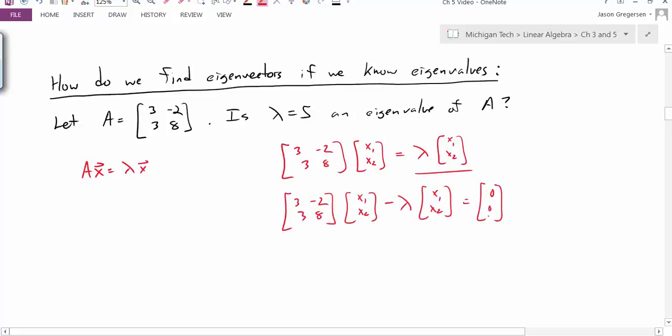So to do that I'm going to subtract this piece over to the left hand side. Notice the right hand side is the zero vector not just the value zero. Now symbolically if I looked at what that looked like, it would look like this. Just subtracting the lambda x to the left hand side.